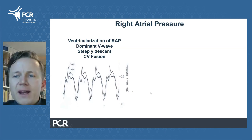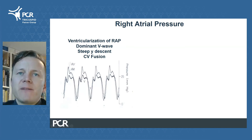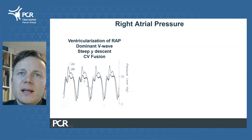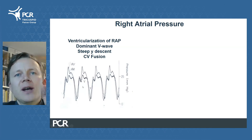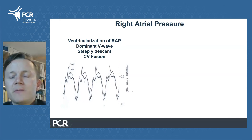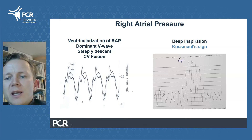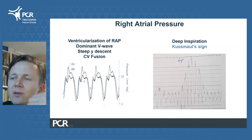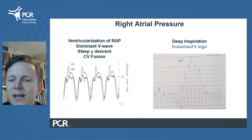During right heart catheterization, in the right atrium you are likely to observe a ventricularized pressure curve with a dominant V wave, a steep Y descent, and fusion of the C and V wave. It's important to know that the absolute height of the V wave does not inform on the severity of tricuspid regurgitation — this is a common misbelief. Additionally, you might encounter a paradoxical increase in right atrial pressure with inspiration — the so-called Kussmaul sign — serving as an indirect sign of reduced right ventricular compliance.